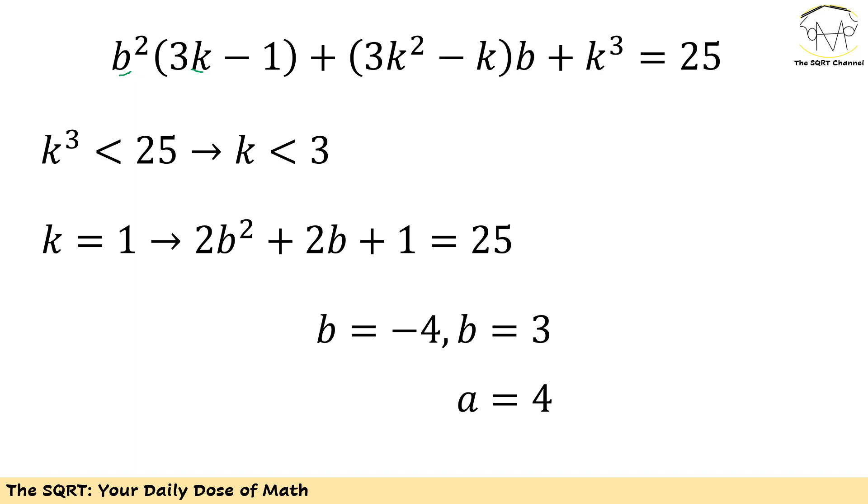On the left hand side I have b²(3k - 1). b is a positive number so b² is a positive number. k is an integer, 3k minus 1 is going to be positive. So the first term is positive. Now let's move to the second term. I have k²(3 - k). Since k is an integer and a positive one this value is positive. b is also positive so at the end the second term is a positive value too. And then I will have k³. So k is a positive integer, k³ is going to be a positive integer.